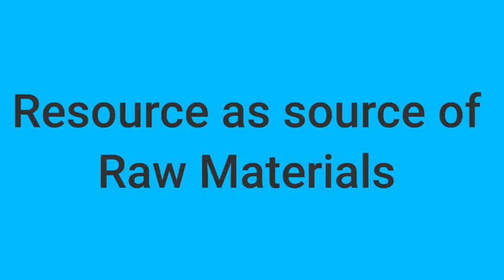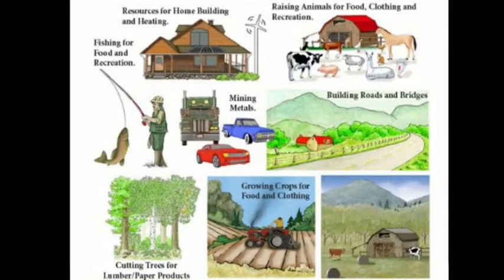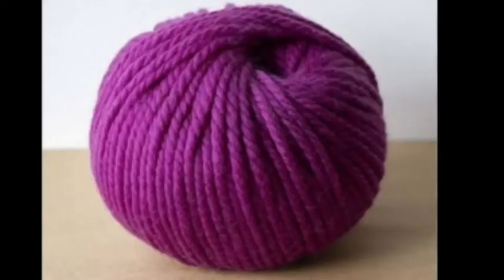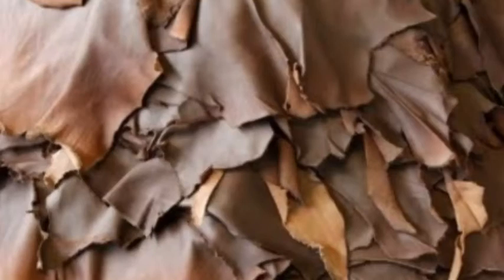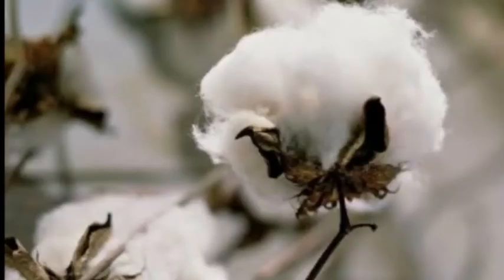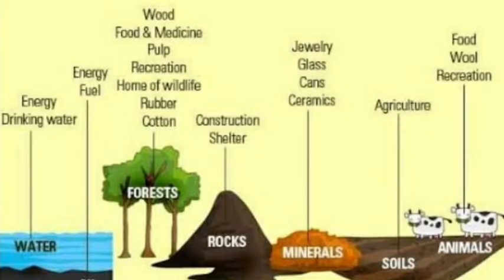Now, resources as source of raw materials. There are many resources on this planet which provide us raw materials for various types of industries. For example, wool is the main raw material for the wool and textile industry, and this wool is obtained from animals. The hides of animals are used for the leather industry. Cotton from cotton plants is the raw material for the cotton textile industry.